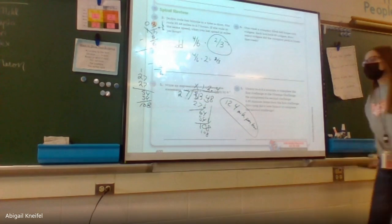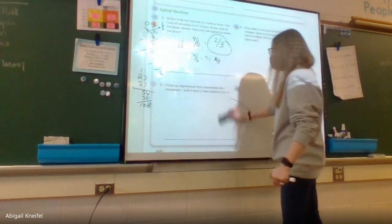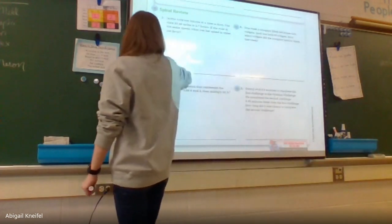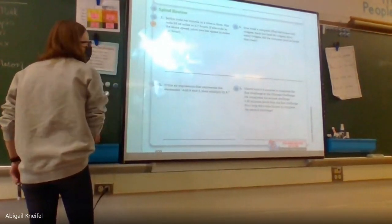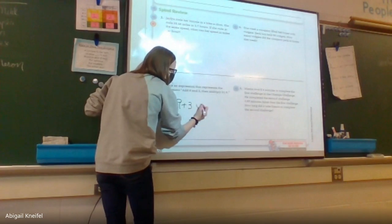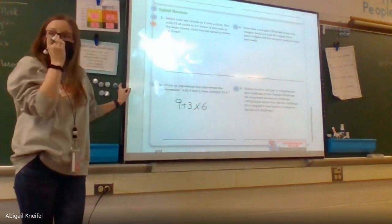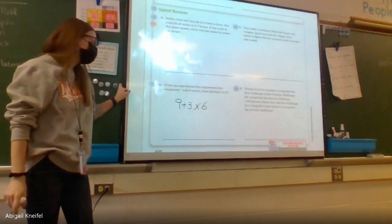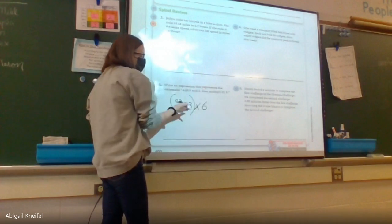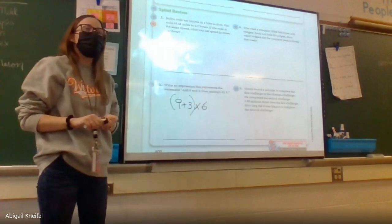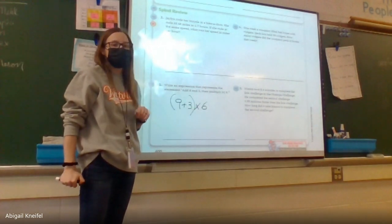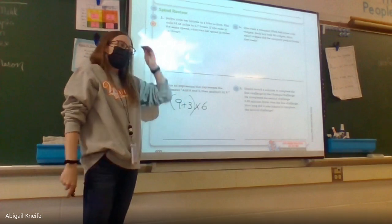Last problem: write an expression for the statement 'add nine and three, then multiply by six.' I know I have nine plus three, then multiply by six. But is nine plus three times six correct? No — according to order of operations we would multiply first. I need parentheses around nine plus three, so it looks like: (9 + 3) × 6. You must have those parentheses.